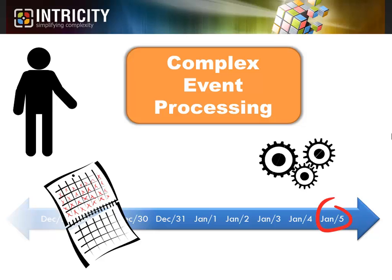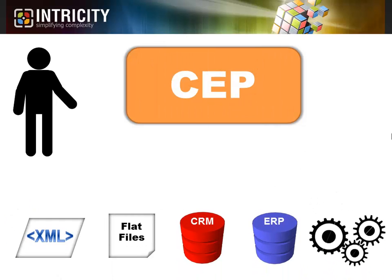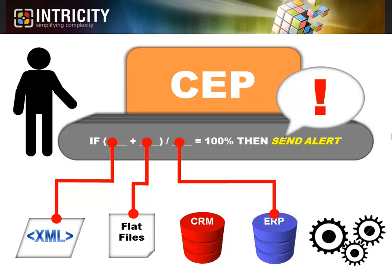You can think of complex event processing, or CEP, as an alerting hub. This means it is connected to the various sources of data in your organization with a series of pre-built triggers for certain events. When these triggers are set off, a pre-built warning can be sent to either a human or another machine. You can imagine how the use of this tool would have helped the sales rep quickly escalate the support issue so that it didn't get in the way of his opportunity.